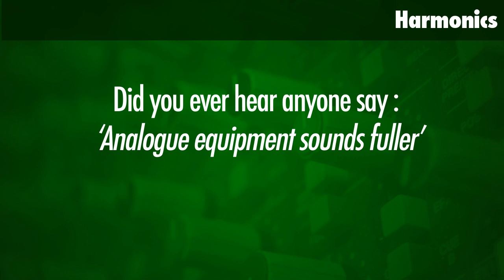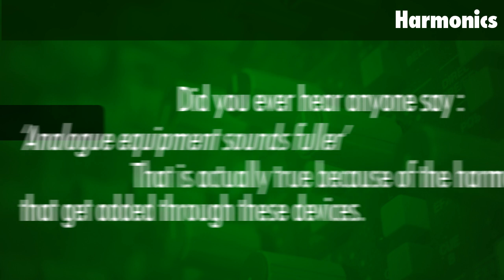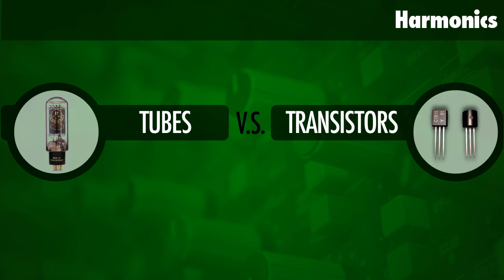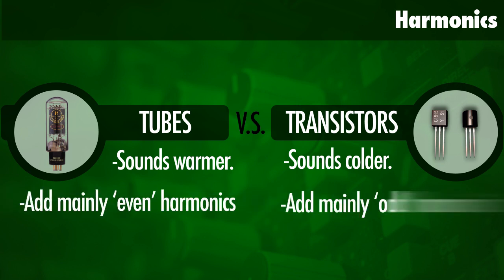When people talk about the warmth of analog sound, it is really because harmonics are being added by the device and its components. In this example I've used a model which uses tubes. If you look at the difference between a tube and a transistor: the tube will sound a lot warmer because it adds more of the even harmonics, whereas transistor-designed equipment normally adds the high odd harmonics, which will sound more harsh and cold.